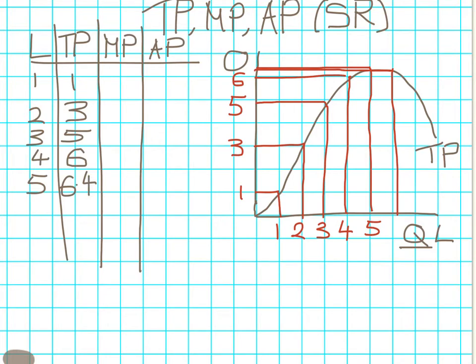The marginal product between employing zero people and one person is one unit of output. You usually write it in between the lines. The marginal product for employing an extra person, going from one to two people, is two additional units of output. Then we've got two additional units of output. Between three and four people, the fourth person is adding one additional unit. The fifth person is just adding 0.4 additional units of output.